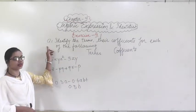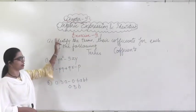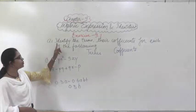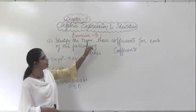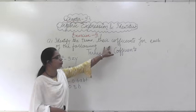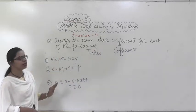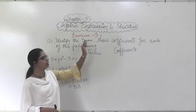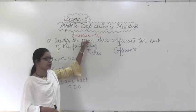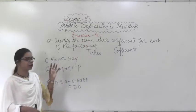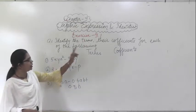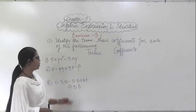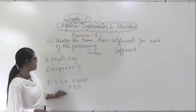The first exercise of Chapter 9, the first portion of this exercise is: identify the terms and their coefficient for each of the following. What you have to do is identify the terms. Terms and their coefficients — yesterday I told you what terms and coefficients are. You have to identify them from this.